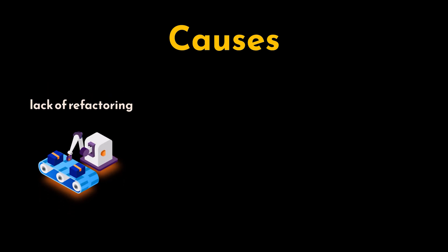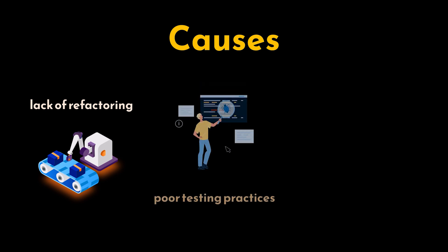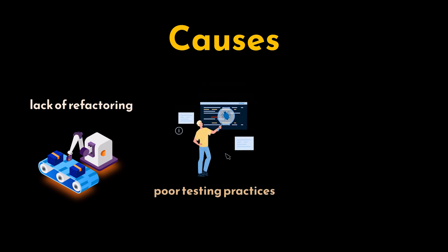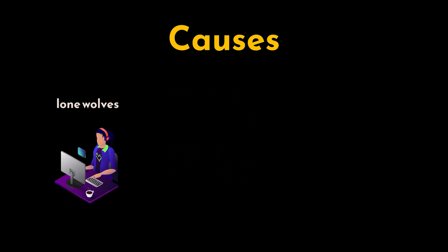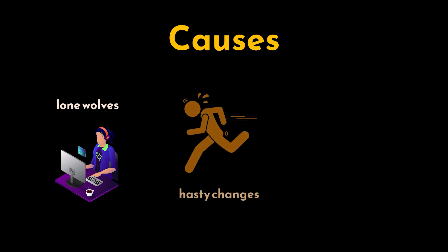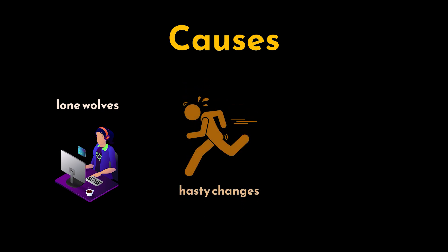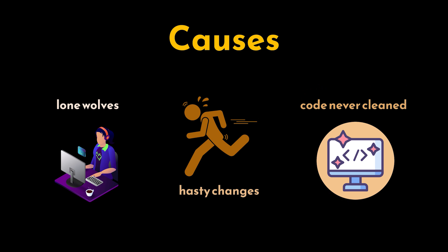Lack of refactoring is one of its main causes. Over time, code is modified to add new features or fix bugs, but it is done without removing or refactoring old code. Poor testing practices and the lack of proper documentation make developers hesitant to remove old code, fearing it might break the system, as they don't understand which parts of the code are still in use and which are not. That code may also result from lone wolves or single developers writing a whole logic by themselves. Additionally, sometimes in response to demonstration deadlines, there is a tendency to make hasty changes to code to deal with immediate problems. Then the code is never cleaned, leaving architectural consideration and documentation postponed indefinitely.